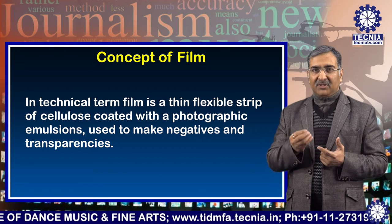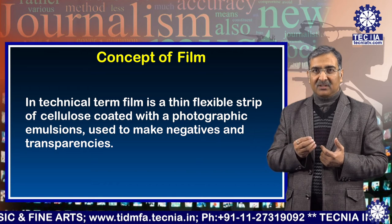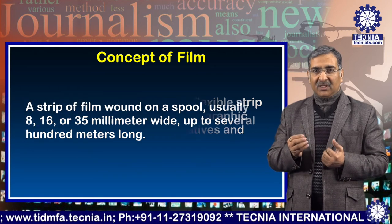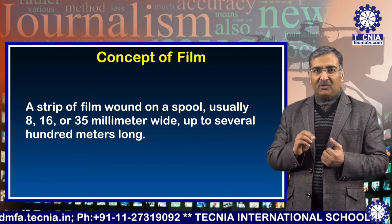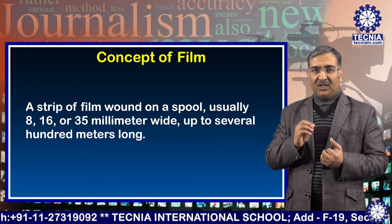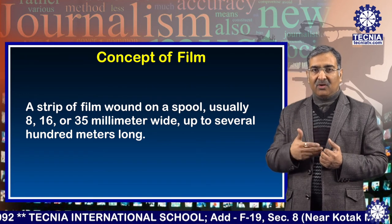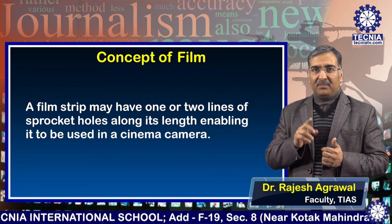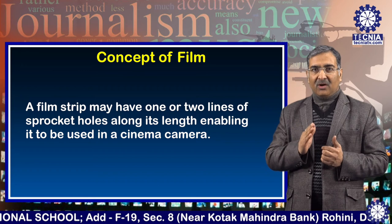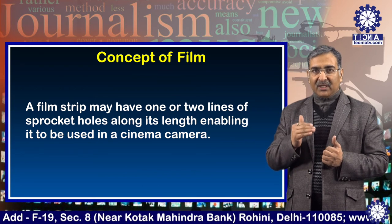In technical terms, film is a thin, flexible strip of cellulite coated with photographic emulsions used to make negatives and transparencies. A strip of film wound on a spool, usually 8, 16 or 35 mm wide, up to several hundred meters long. A film strip may have one or two lines of sprocket holes along its length enabling it to be used in a cinema camera.